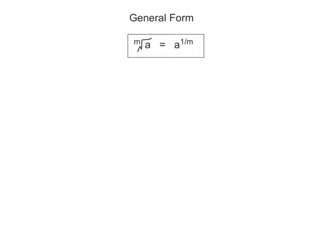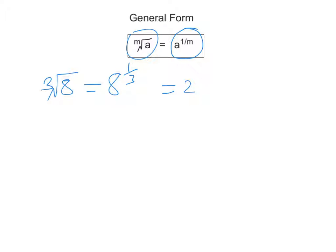You will have noticed from the last slide that there seems to be a bit of a pattern happening here. The general form is that if you've got the mth root of a, it's equal to a to the one over m power. For example, the cube root of 8 equals 8 to the one third, and the answer to that is 2, because 2 times 2 times 2 — three of them multiplied together — makes 8.